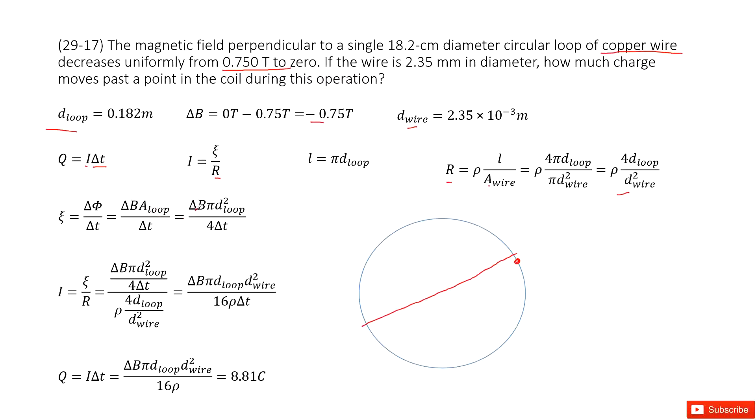The loop area A is πr², which is the loop diameter squared divided by 4.